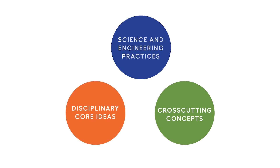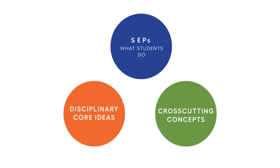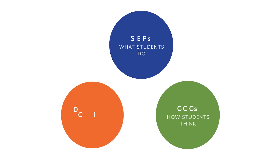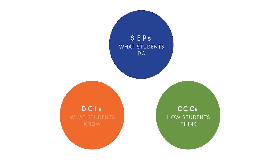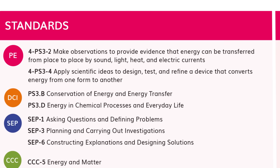With students at the center of 3D learning, SEPs can be thought of as what students do, CCCs as how students think, and DCIs as what students know. Every standard, also called a performance expectation, is supported by three dimensions.